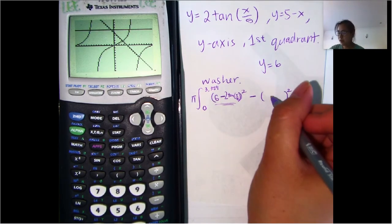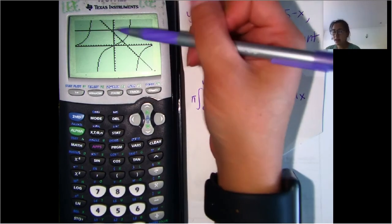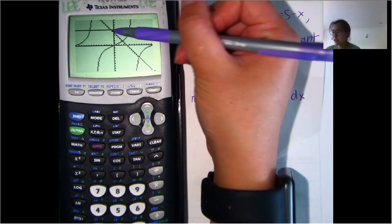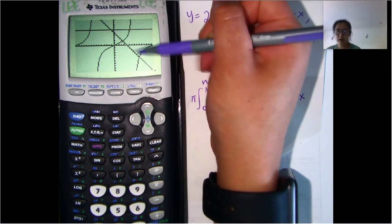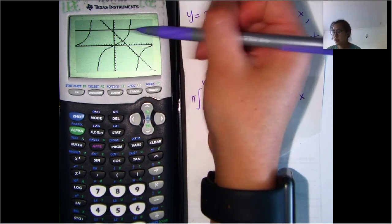And then over here, same thing. We'll want to find the distance between the line that you're revolving around and then the inner radius, which is this line right here. So we do this line minus this line.